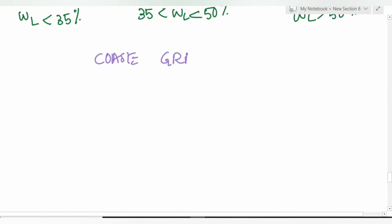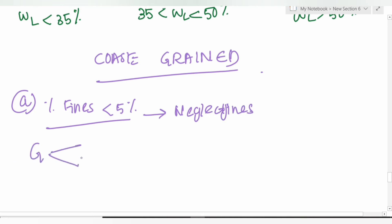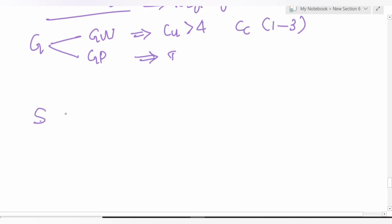Coarse-grained soil classification: if percentage fines < 5%, neglect fines. For gravel: GW needs Cu > 4 and Cc between 1–3; otherwise GP. For sand: SW needs Cu > 6 and Cc between 1–3; otherwise SP.